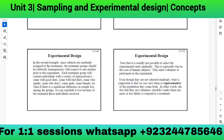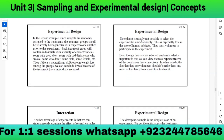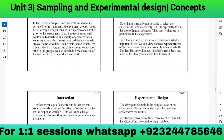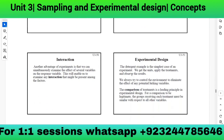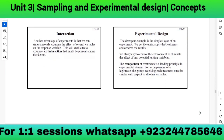Note that it is usually not possible to select experimental units randomly, especially with human subjects — most must volunteer. What is important is that volunteers can be viewed as representative of the population they come from. The detergent example is the simplest case: we get the units, apply the treatment, and observe results. We always try to control the environment to eliminate any potential lurking variables.